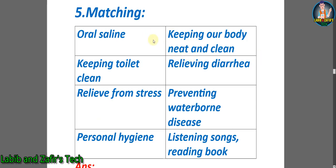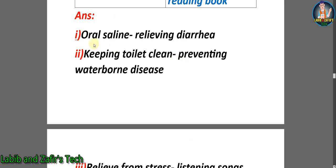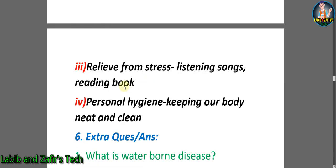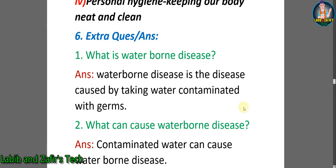Now let's go through some matching. Here we can see a chart. Number one: oral saline — relieving diarrhea. Number two: keeping toilet clean — preventing waterborne disease. Number three: relief from stress — listening to songs, reading books. Number four: personal hygiene — keeping our body neat and clean.